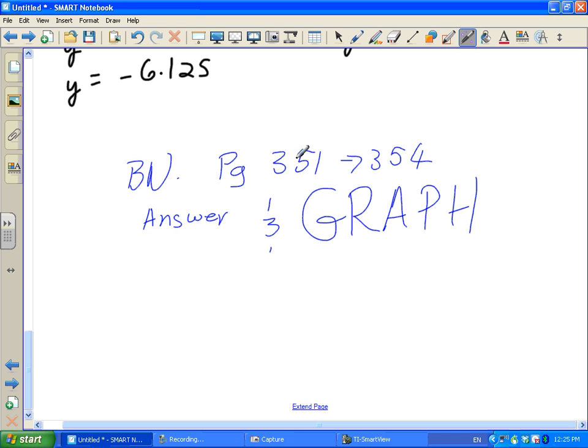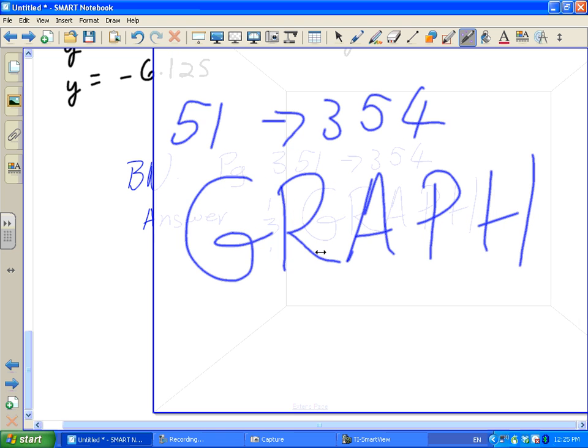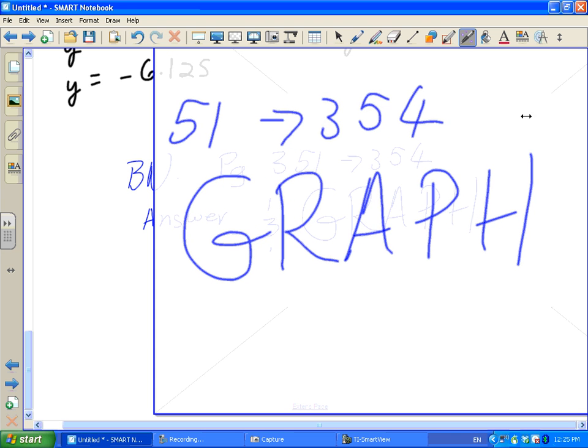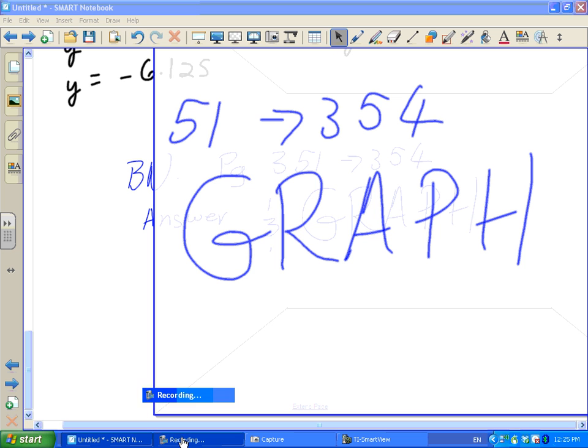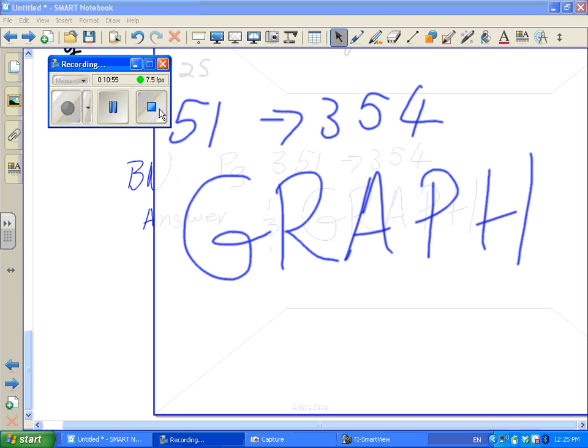Graph them. Graph. Ready? I'm going to make you zoom in. Graph. Make sure you graph them. Shoot. I don't know how to get rid of that now. What? You have to go up. 351. That's okay.